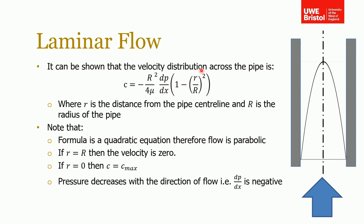We can see that from the equation because if we set the radius to the radius of the pipe, then we have capital R over capital R which is 1, 1 squared is 1, 1 minus 1 is 0, so therefore the velocity becomes 0.